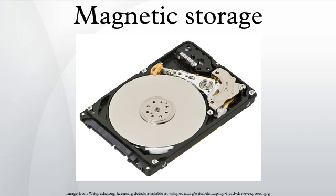The magnetic surface is conceptually divided into many small sub-micrometer-sized magnetic regions, referred to as magnetic domains, each of which has a mostly uniform magnetization. Due to the polycrystalline nature of the magnetic material, each of these magnetic regions is composed of a few hundred magnetic grains. Magnetic grains are typically 10 nm in size and each form a single true magnetic domain.